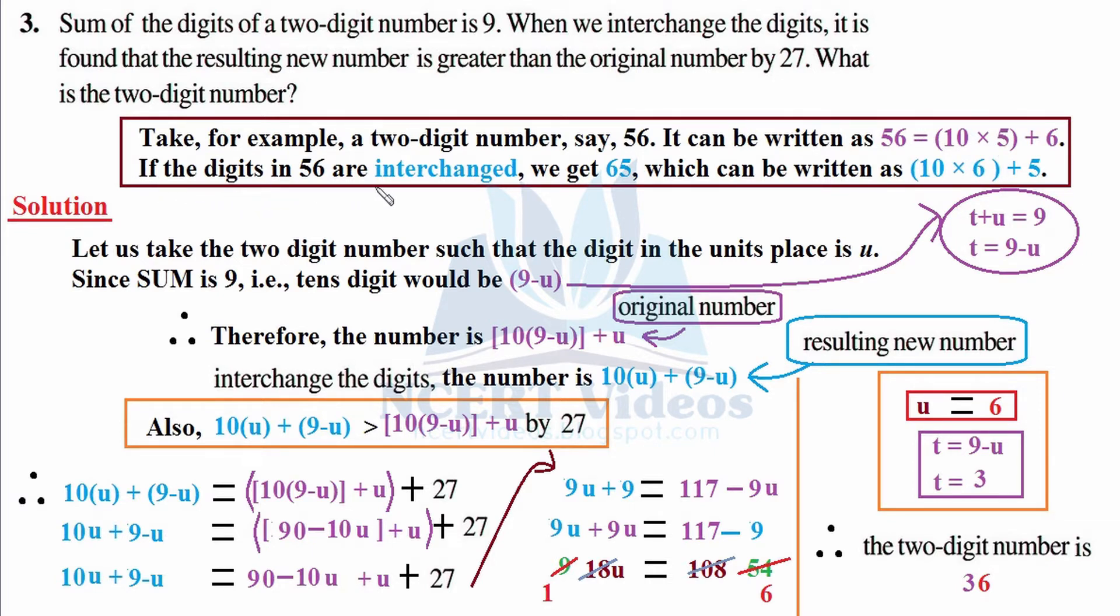Now if the digits in 56 are interchanged, that is we flip the digits, we get 65. That is, 6 is moving towards tens digit and 5 is moving towards unit place. That would be called interchanging the digits. Now 65 can be written very similar to its original number: 10×6 + 5. With this concept we will try to solve our question.